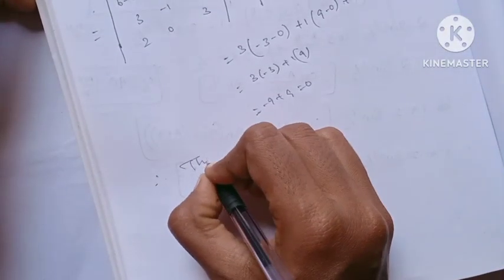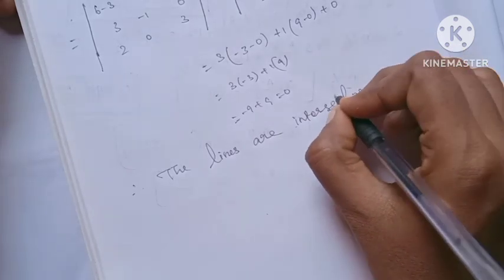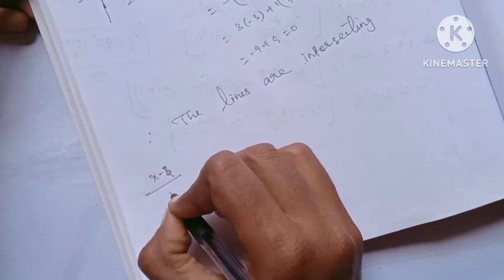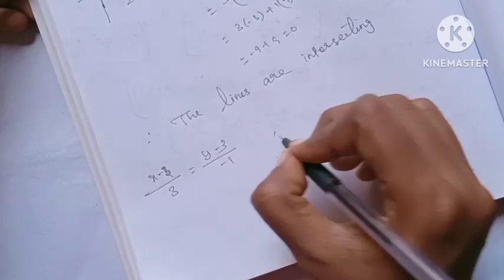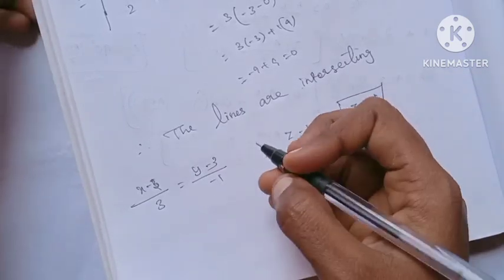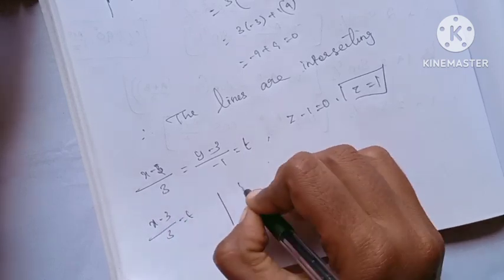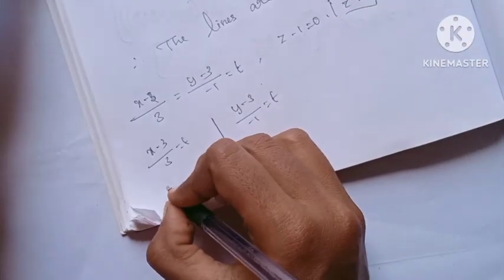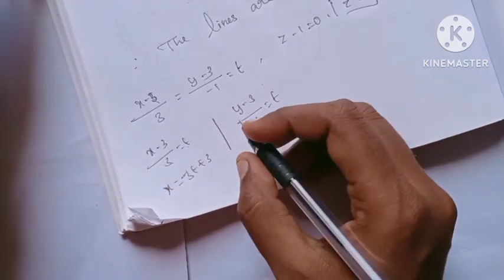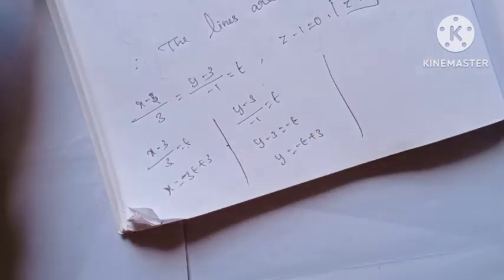So the lines are intersecting. Now we find the intersection point. For the first line, let x minus 3 by 3 equals y minus 3 by minus 1 equals z minus 1 by 0 equals t. Then x equals 3t plus 3, y equals minus t plus 3, and z equals 1.